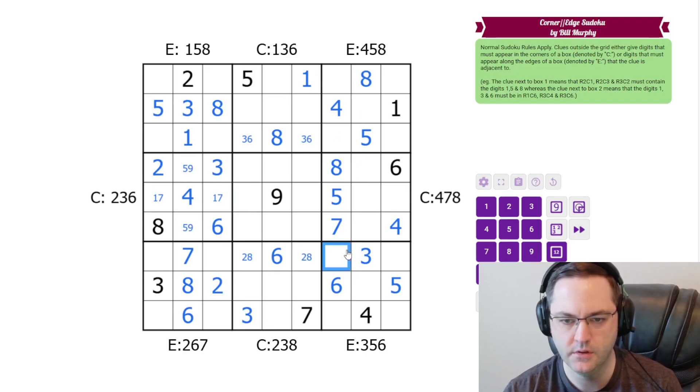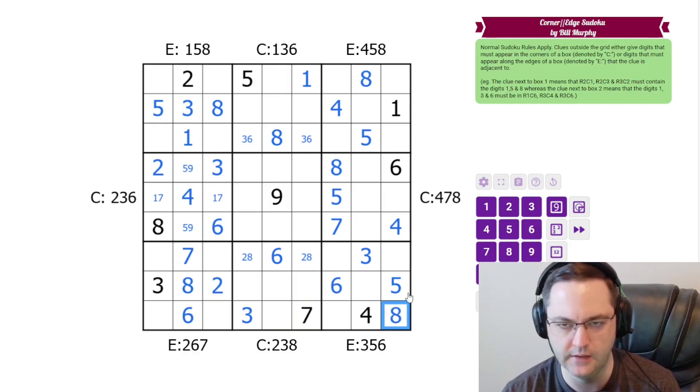All right. We're going to have a 1 down here. We're going to have a 2 here. Ah, 8. So 8 can't go in these cells with the digits. But we also have a 2, 8 pair here. So this is our number 8.